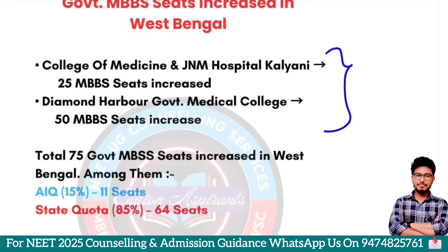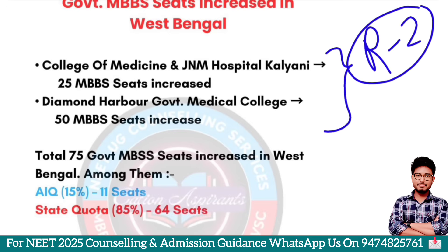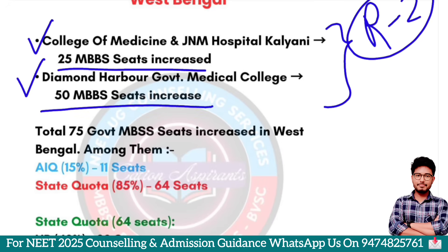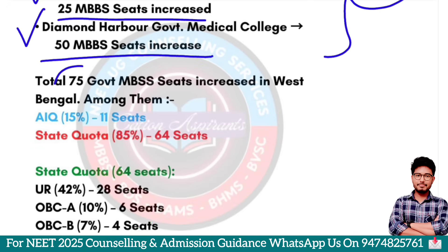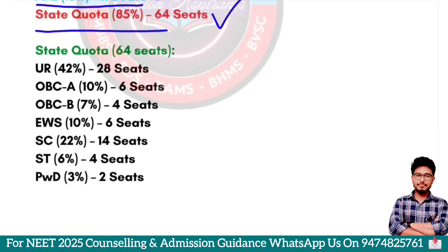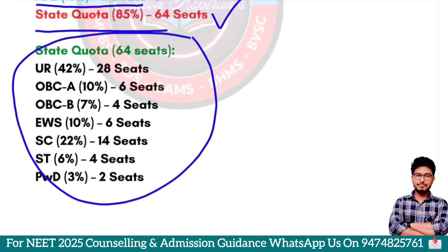In other medical colleges, there is a seat increase in this academic year. I will talk about Round 2 counseling. College of Medicine and JNM Hospital has a small seat increase. There is a government medical college with a small seat increase. The state quota is 4.6 seats. The category is segregated. The next one is the seat matrix.